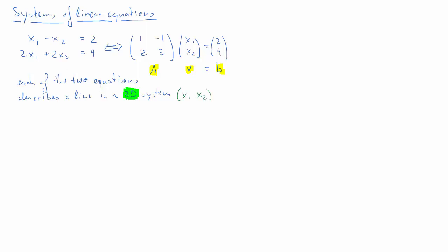You could call them X and Y, or Z and M, or P and Q — whatever. You just need to be consistent. So here we call the two dimensions X1 and X2. In order to see that these equations represent a line, we will solve both equations for X2 and put X2 on the vertical axis. What we get is X2 equals negative 2 plus X1, and X2 equals 2 minus X1.